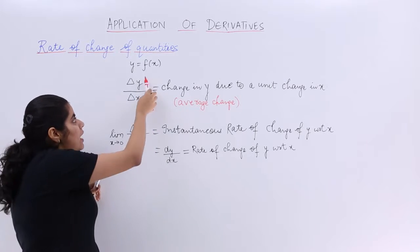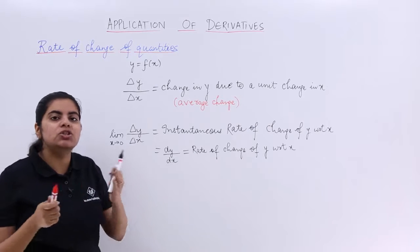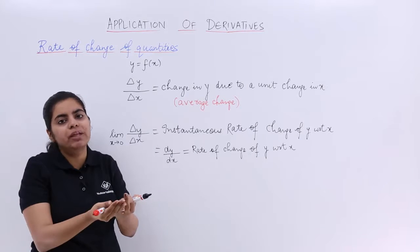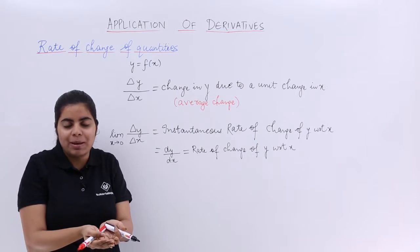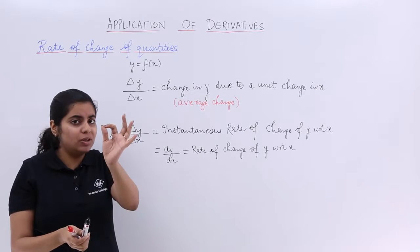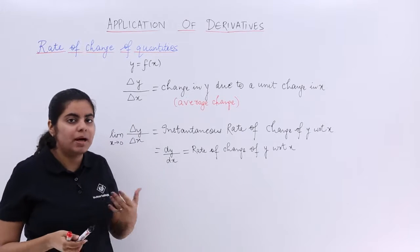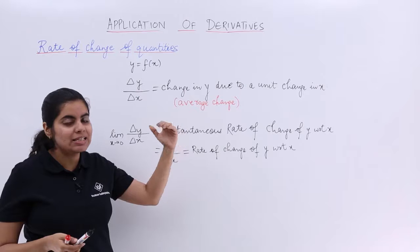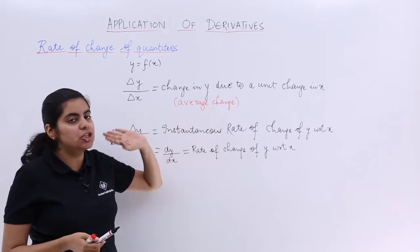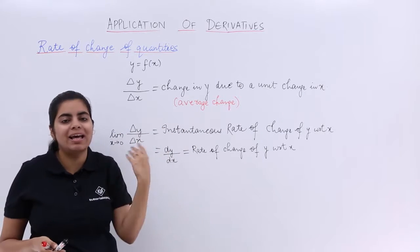But del y upon del x, is it talking about the whole of the interval that you are talking about? Maybe. Or only a particular instant. So my dear friends, del y upon del x is nothing but the average change we are talking about. That means the whole as summed up.